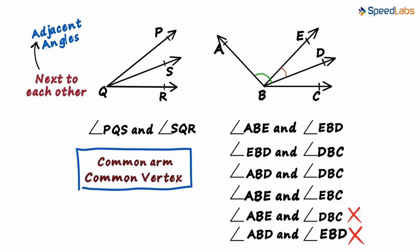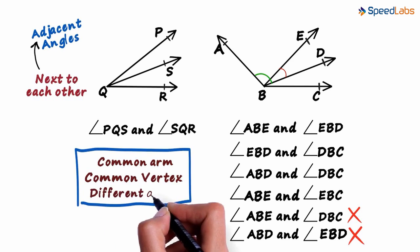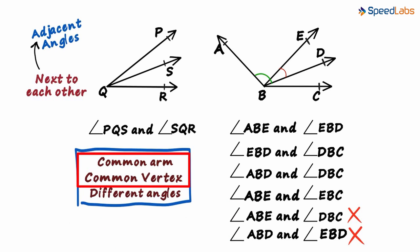When we talk about pairs, we talk about different angles. So apart from these two conditions, remember that two angles cannot be adjacent if one angle is a part of the other.